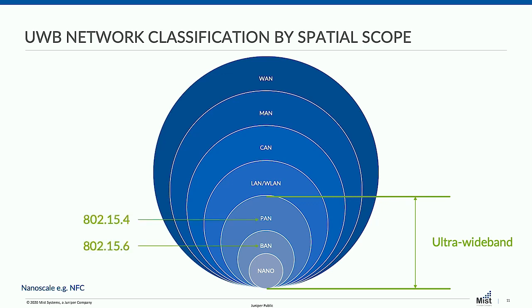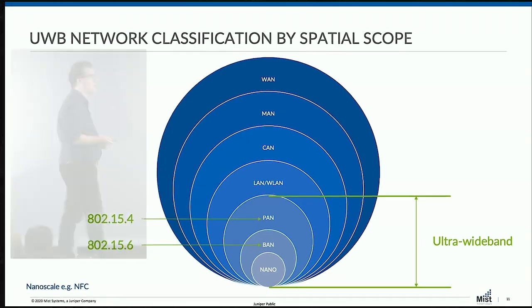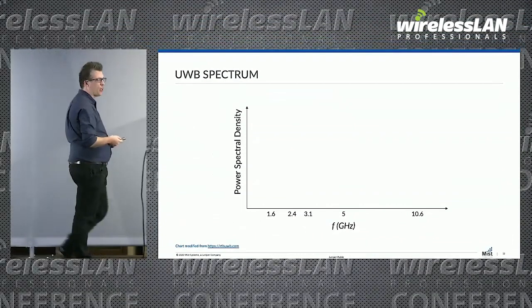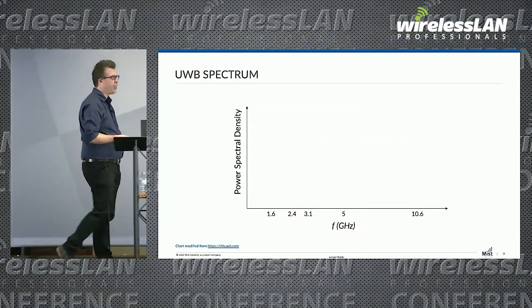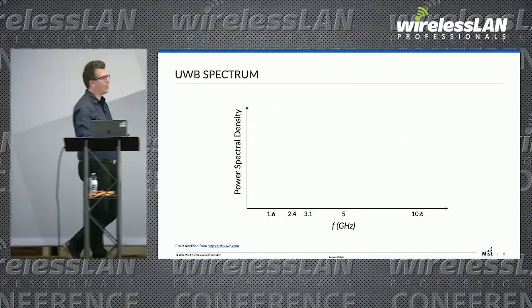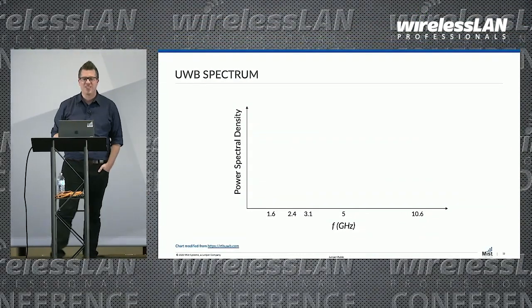The 802.15.6 wireless body area networks — that's where ultrawideband sort of fits in, in that closer proximity with sensors in or inside your body, which will be kind of interesting. It might scare some people, but we'll see what happens.